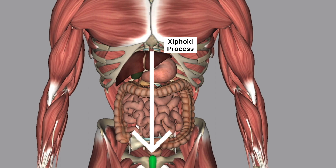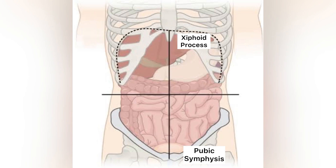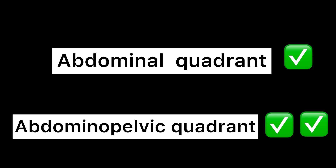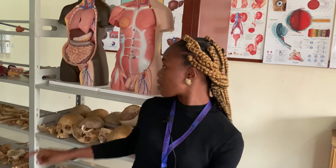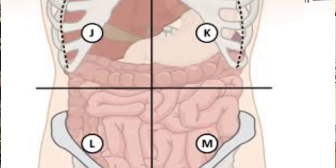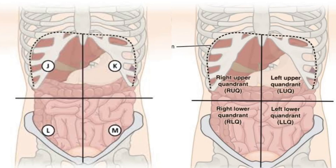The median plane specifically follows the linea alba, from the xiphoid process down to the pubic symphysis — which is why some authorities prefer to call these the abdominopelvic quadrants. The next line is horizontal, or transverse, and it forms the transumbilical plane, because it passes through the umbilicus, which is your navel. These two lines divide the abdominal region into four quadrants: right upper, right lower, left upper, and left lower.